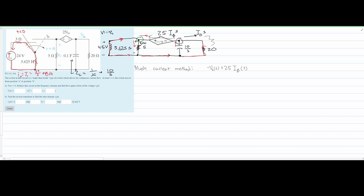The voltage across the 20-ohm branch, which we call V₁(s), equals 20·I₀(s), since that is the current flowing through it. So V₁(s) = 20·I₀(s). Adding this into our gray-node equation and setting it equal to zero, we then rearrange to find that V₀(s) = 45·I₀(s). That is the result from the gray node and the first part of the problem.